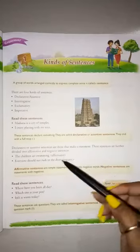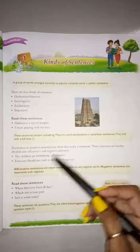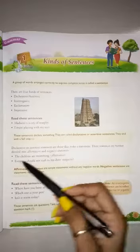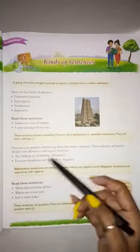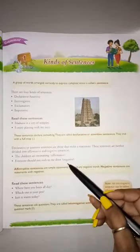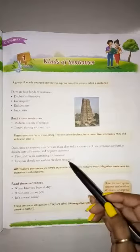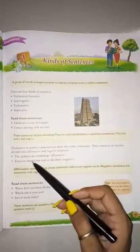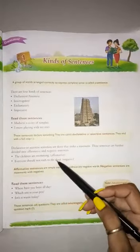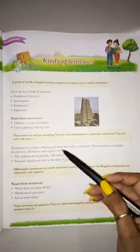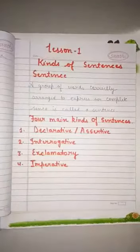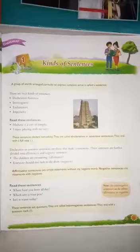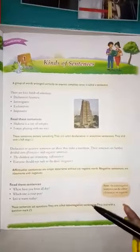Affirmative sentences are those which do not have a negative point — they are simple statements. For example: 'The children are swimming.' Negative sentences are those which contain a negative statement. For example: 'Everyone should not rush to the door.' These two are examples of declarative sentences.